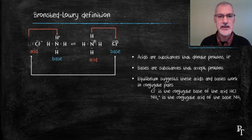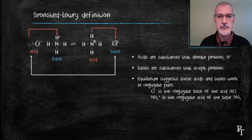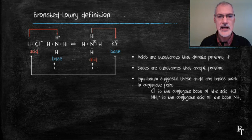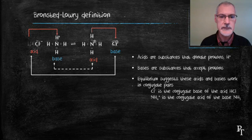For every acid, there's a matching base. In this case, hydrogen chloride is matched with the base chloride ion. And the acid ammonium is matched with the base ammonia. And these constitute acid-base pairs. You should note that acid-base pairs simply differ by a proton, an H+ ion.